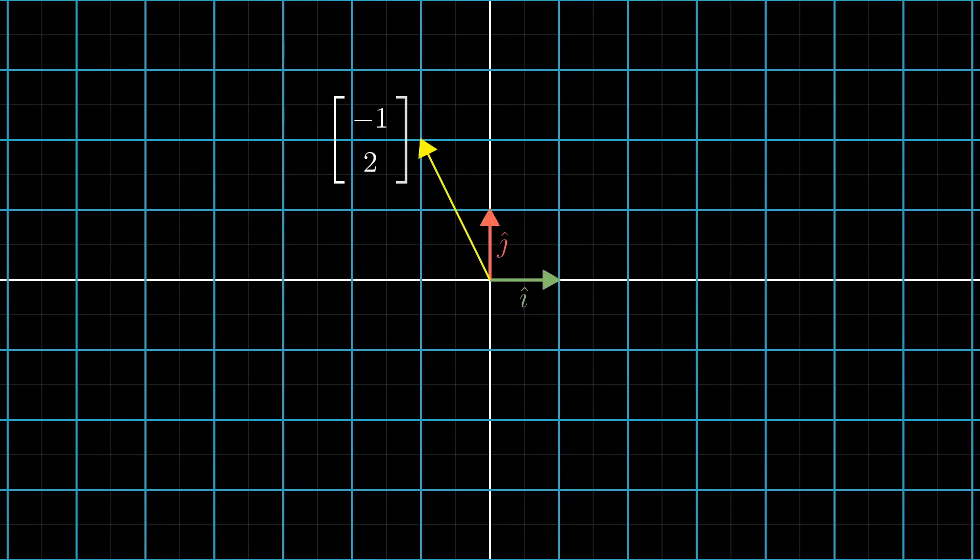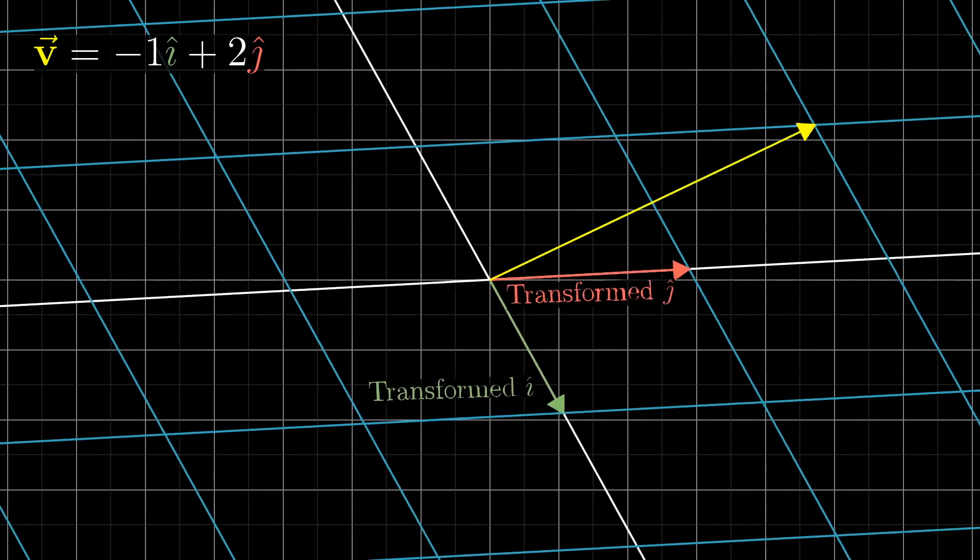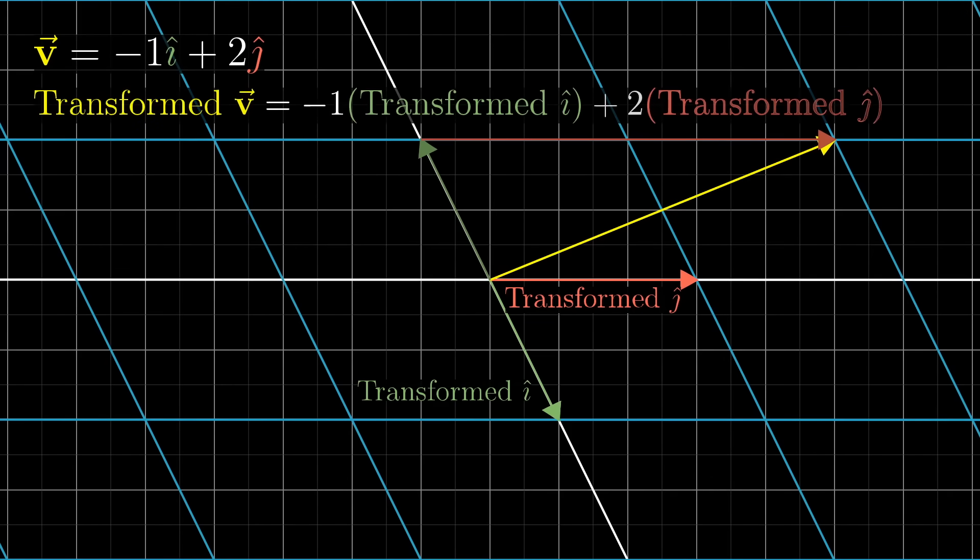For example, consider the vector v with coordinates (-1, 2), meaning that it equals -1 times i-hat plus 2 times j-hat. If we play some transformation and follow where all three of these vectors go, the property that gridlines remain parallel and evenly spaced has a really important consequence. The place where v lands will be -1 times the vector where i-hat landed plus 2 times the vector where j-hat landed. In other words, it started off as a certain linear combination of i-hat and j-hat, and it ends up as that same linear combination of where those two vectors landed.